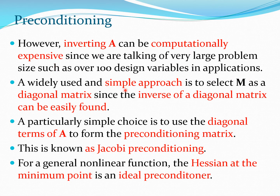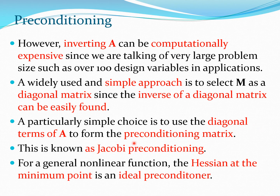A simpler approach is to select M as a diagonal matrix, since the inverse of a diagonal matrix is very easy to calculate. A particularly simple and creative choice is to use the diagonal terms of A — if A is a populated matrix, simply set all non-diagonal terms to zero and use only the diagonal terms to form the preconditioning matrix M. This approach is known as Jacobi preconditioning.